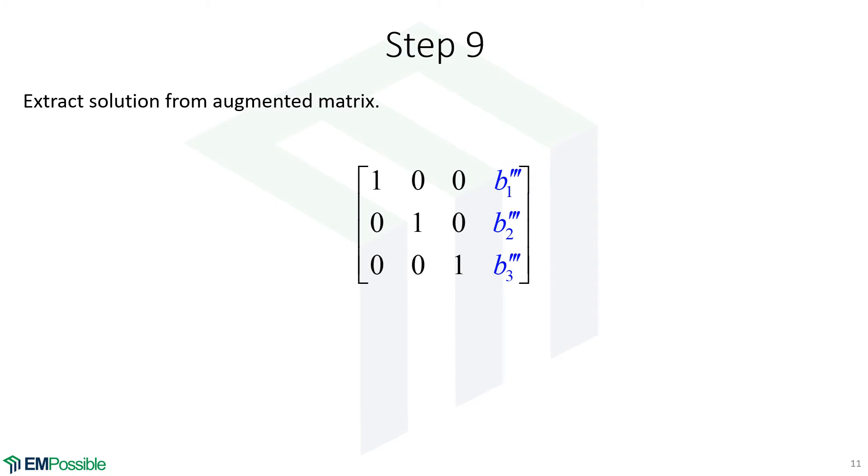So here's our augmented matrix now. We have the identity matrix where we used to have the A matrix, and we have all new values of B here that came out of this process. That last column here, these Bs, this is the solution to the problem. We have to extract that out.